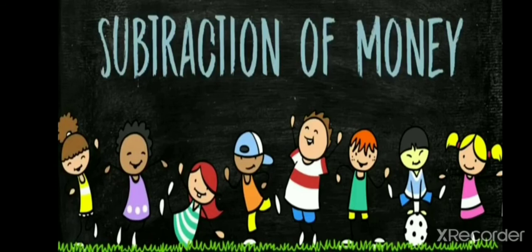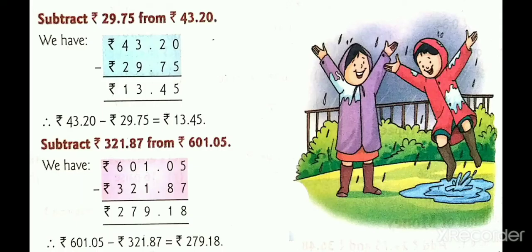Now let's learn how to subtract money. The question is: subtract rupees 29.75 from rupees 43.20. Write in columns — rupees under rupees and paise under paise. Remember: the larger amount goes on top and the smaller amount at the bottom. Then subtract to get the answer. Another example: 321 rupees 0.87 subtracted from 601.05 — follow the subtraction rules to find the answer.